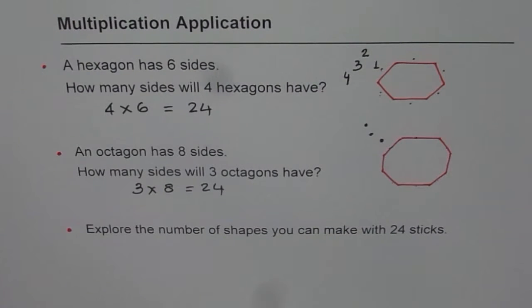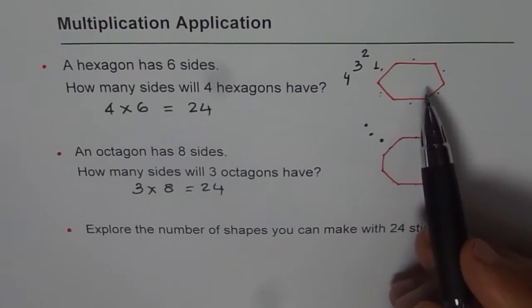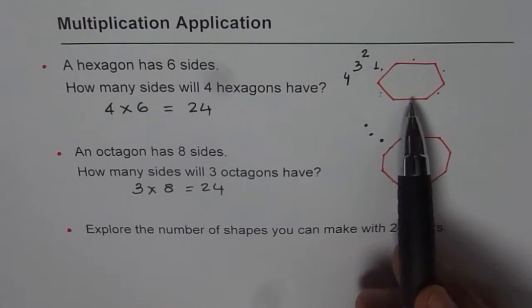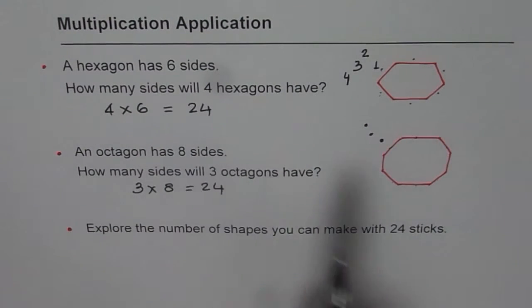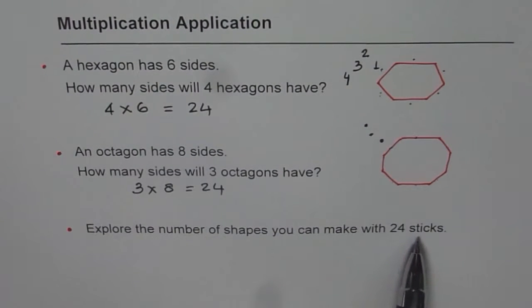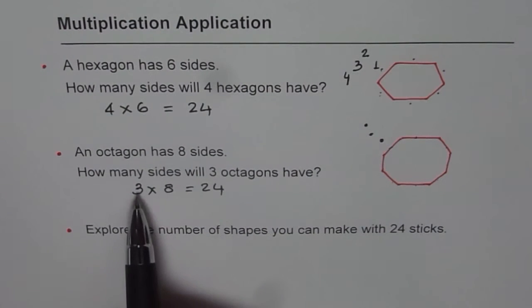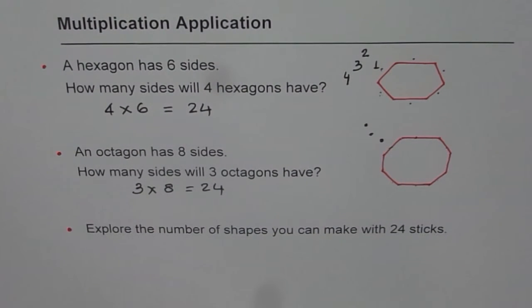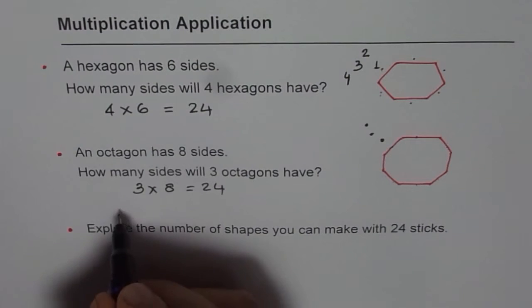Now the last question is for you to figure out. Explore the number of shapes you can make with twenty-four sticks. If you're trying to make hexagons, you can make four hexagons with twenty-four sticks, right? If you're trying to make octagons, you can make three octagons with twenty-four sticks, right? How about other shapes, right? So you can think about other shapes, you know.